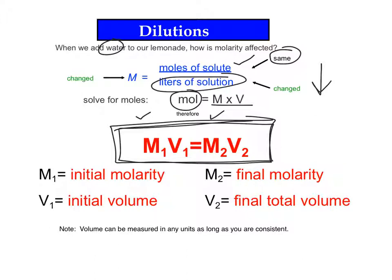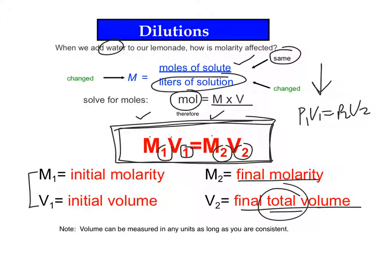The dilution formula we want you to write down is M1V1 equals M2V2. This should sound pretty familiar to our gas law, P1V1 equals P2V2. M stands for molarity, V stands for volume, and the ones just indicate the original molarity and the original volume. And then the twos is what's the new molarity and the new total volume. And I'll explain why I stress total in a little bit.